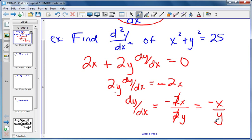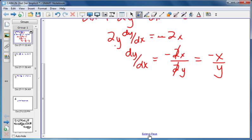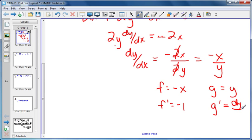So now that we have the first derivative, we can take the derivative of it to find the second derivative. To take the derivative of negative x over y, we're going to need to use the quotient rule. f will be negative x, g will be y, f prime is negative 1, g prime is dy over dx.